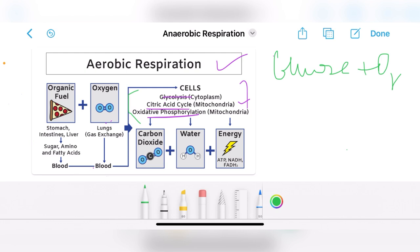Now let's see what are basically the products of aerobic cellular respiration. So at the end of aerobic cellular respiration, what we get is carbon dioxide, water, and most importantly is energy in the form of ATP, NADH, and FADH2.